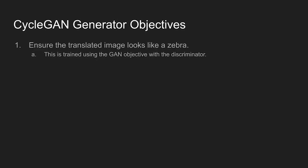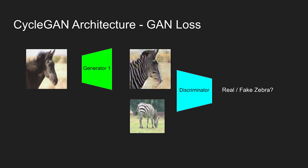The CycleGAN has two objectives for its main generator, Generator 1. The first is to ensure the translated image looks like it is, in fact, a zebra. This is trained into the generator using a Generative Adversarial Network architecture, or GAN for short. Here, the discriminator and generator train adversarially. The discriminator's goal is to classify whether an image is a real zebra or a fake zebra made up by the generator. The generator, training alongside the discriminator, tries to make images which fool the discriminator into thinking they're real. Thus, the generator must learn to make convincing-looking images of zebras.